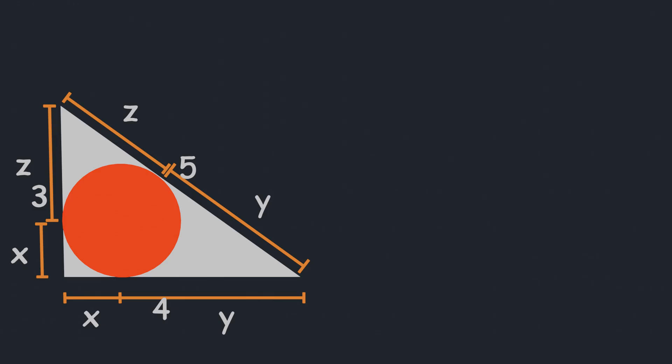Now we can see the relation between the variables and known values, let's write them. First, x plus z equals 3, which we can write as x equals 3 minus z.